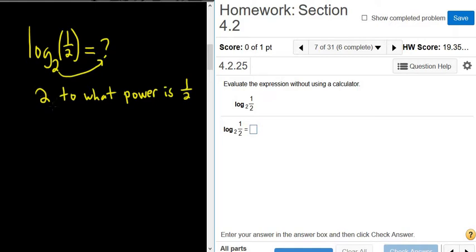Well, the only way to get from 2 to 1 half is to bring the 2 downstairs. So if we had a negative exponent, that would work. So the answer here should be negative 1.